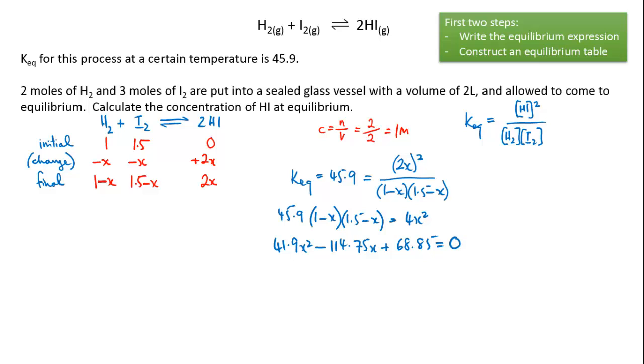This looks like a standard quadratic which you can solve using the standard formula: x equals minus b plus or minus the square root of b squared minus 4ac all over 2a. In this case your a is 41.9, your b is minus 114.75, and your c is 68.85.